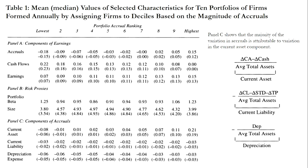Panel C of Table 1 shows that the majority of the variation in accruals is attributable to variation in the current asset component.